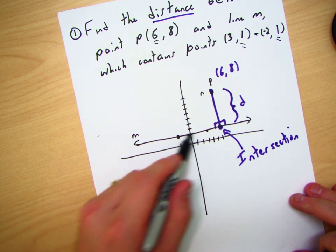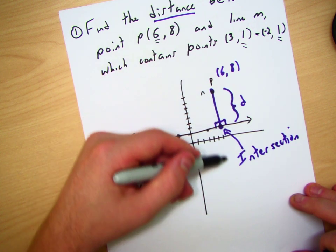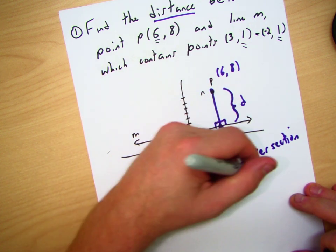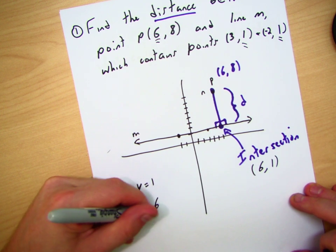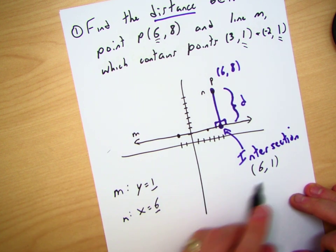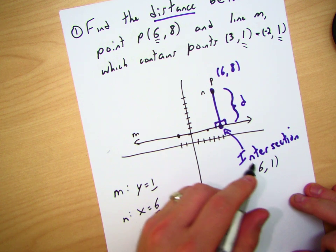Well, where would the line Y = 1 and X = 6 intersect? I'm going to guess that the intersection here is going to be (6, 1) because of these two points. 6 in the X, 1 in the Y. So here's my intersection.